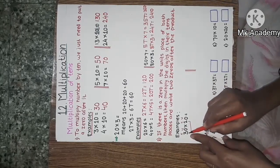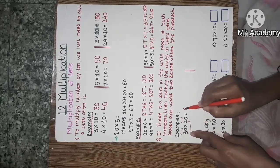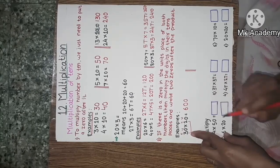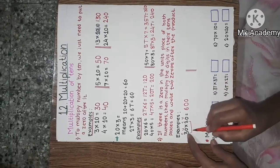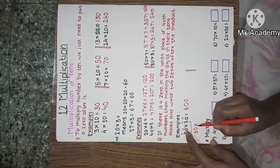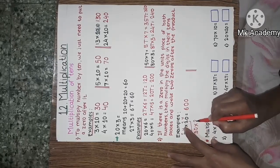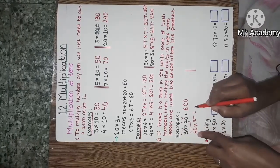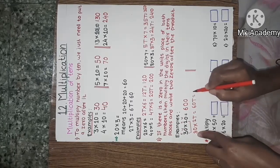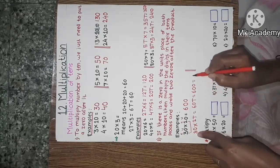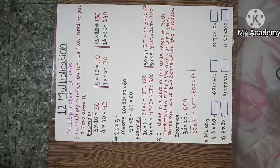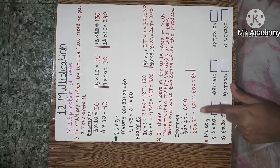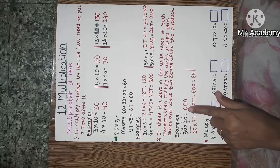Let us do an example. We multiply the tens places: 2 threes are 6, and then write two 0s to get the answer 600. In another way: 30 into 20 means 2 tens, giving 60 tens, which means 600. The answer is 600.